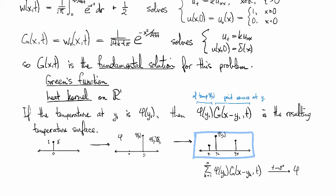So then we could take this one step further, and instead of having just a discrete sum of point sources, we could have a continuous distribution of point sources. And so then in this case, instead of having that discrete summation, we would have a continuous integral. And so if we integrate that with respect to y, then we would get the resulting temperature surface from such an initial condition.